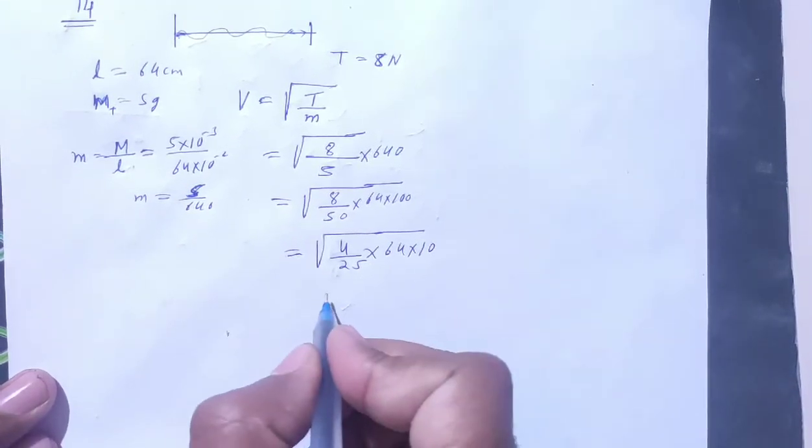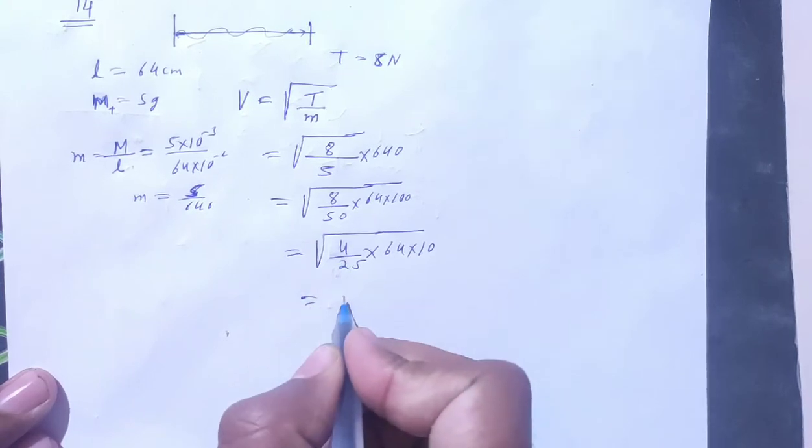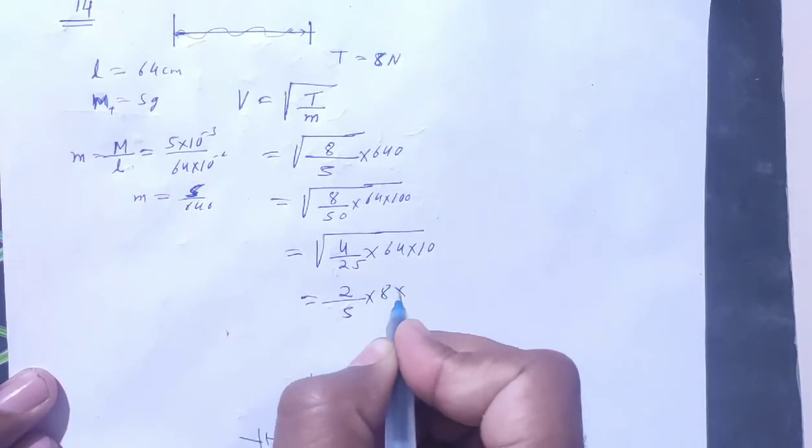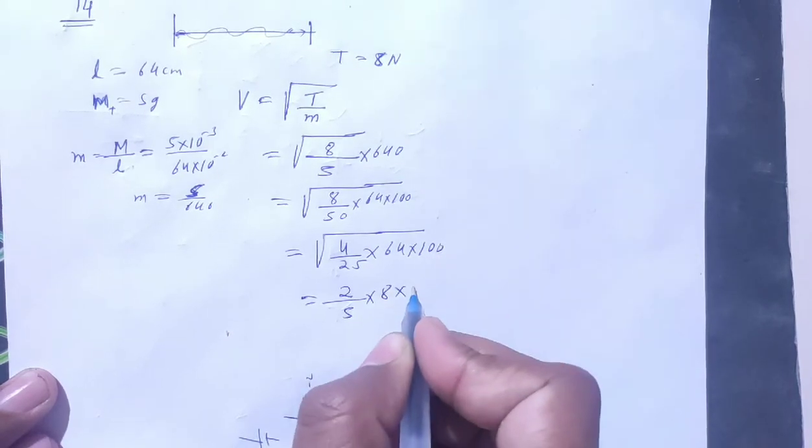This is perfect square. This is 2 squared, this is 25, this is 4, this is 8, and this is 10.